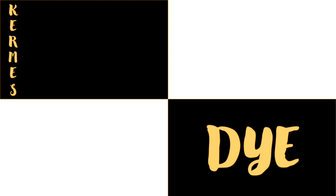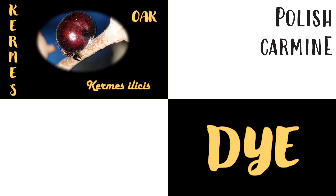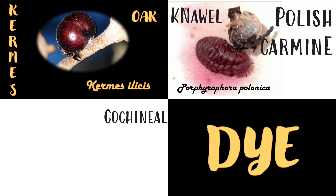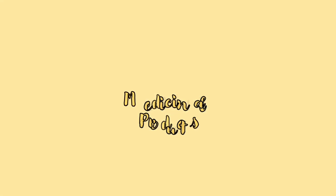Dyes from the dried body of scale insects: Kermes dye from Kermes ilicis feeding on oaks; Polish carmine dye from Porphyrophora polonica feeding on knotweed; and the cochineal scales, Dactylopius coccus, feeding on Opuntia or the prickly pear cactus.